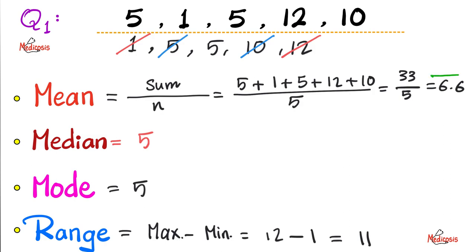So, to recapitulate, the arithmetic mean is 6.6. The median is 5. The mode is also 5. And the range is 11. Pause and review.